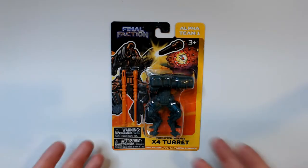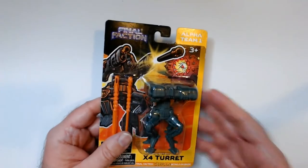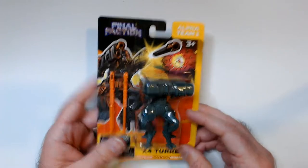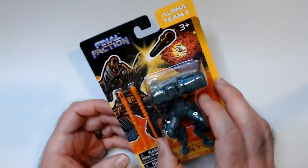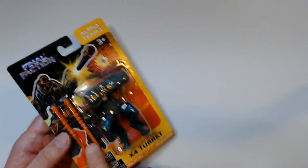Welcome back to RR. Today we have Final Faction X4 Turret with Final Factions from the Dollar Tree or Dollar 25 Tree. So this is just an add-on accessory. The turret looks like it's got some missiles that's gonna fire, two of them.